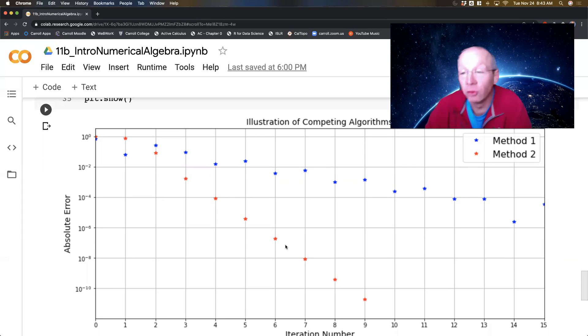Now what I'm hoping is that you chose method number two. It looks like at each iteration we improve maybe even by two orders of magnitude, one and a half to two orders of magnitude on the absolute error.